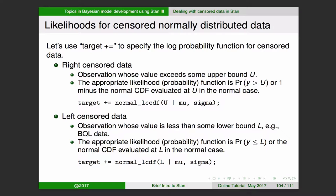For left-censored data — where the observation is less than some lower bound L, such as BQL data where concentration is below the limit of quantitation — the appropriate likelihood calculates the probability that Y is less than or equal to L. Using the normal CDF evaluated at L, in Stan that's: target += normal_lcdf(L | mu, sigma), where LCDF is the log of the cumulative distribution function. When dealing with BQL data in Stan, this is the approach to use.